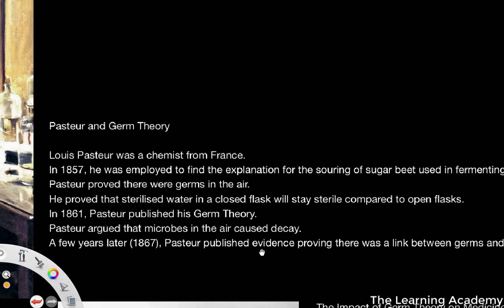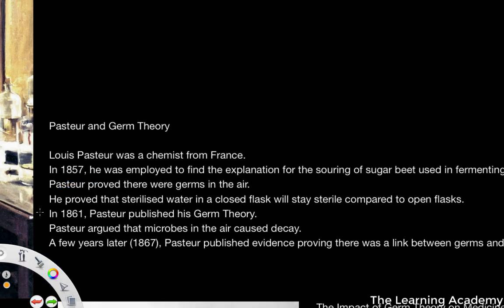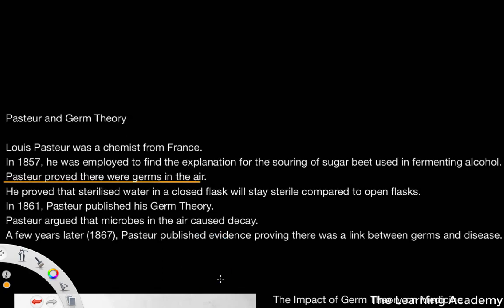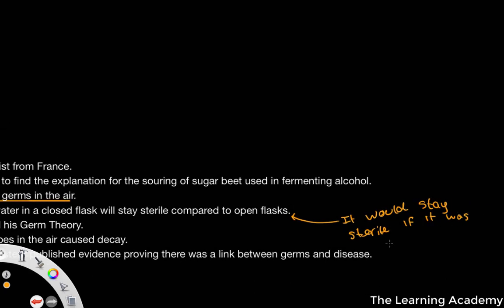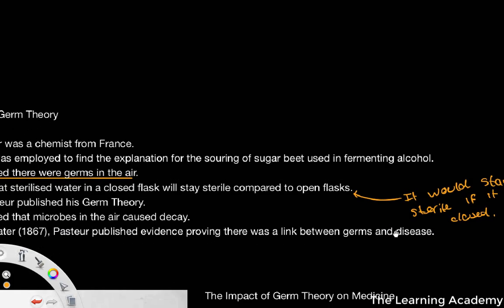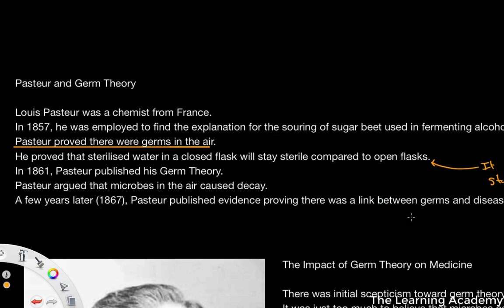What Pasteur really did was he proved that germs did exist in the air. He also proved that sterilized water in a closed flask will stay sterile compared to open flasks. So this is how he proved that germs were in the air — when you open the flask, the air gets in, so he proved that germs were in the air and they traveled through the air. And in 1861, he published his germ theory.